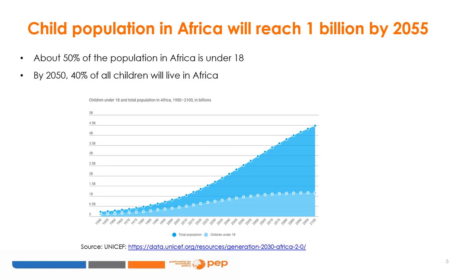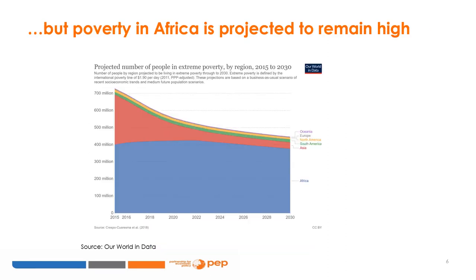Right now, about 50% of the African population is under 18 years of age. However, poverty is projected to remain high in Africa. Despite poverty having decreased, the largest share of poor people will still be in the African continent, which means that a lot of children will still be living in poverty in the future.